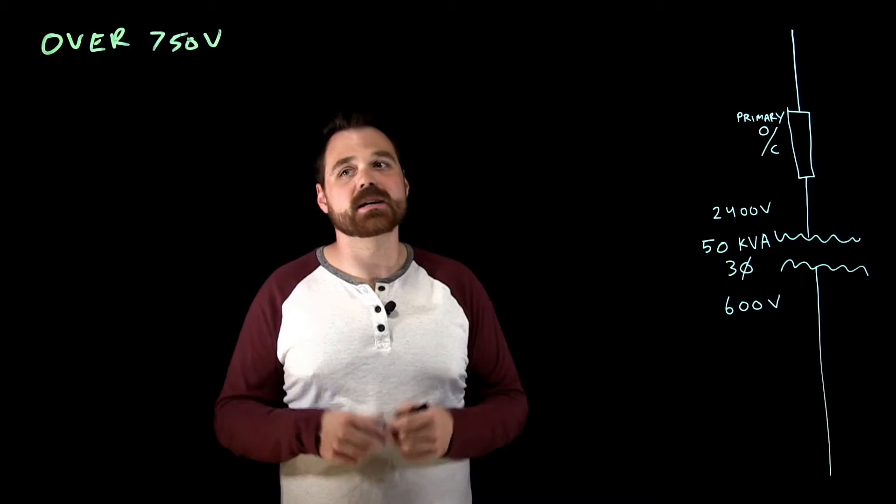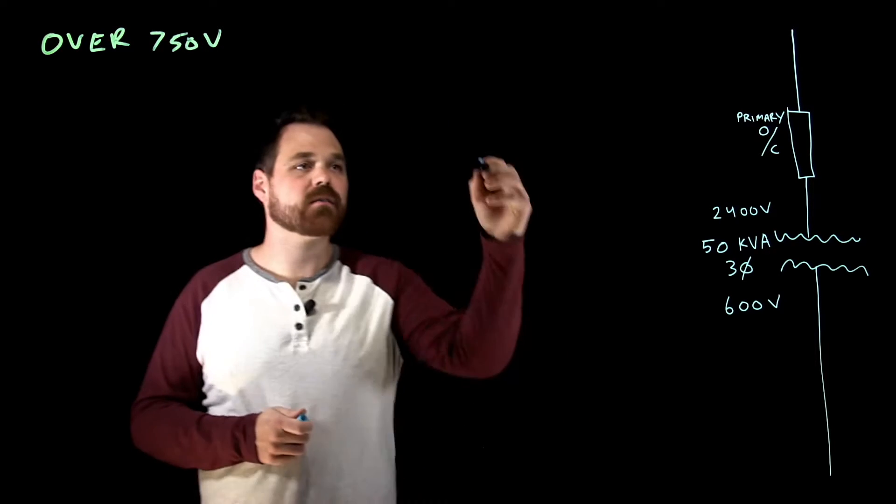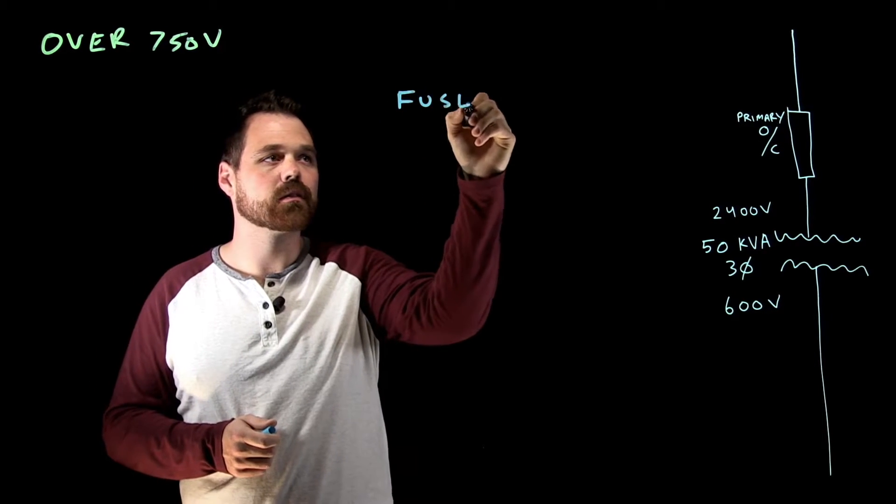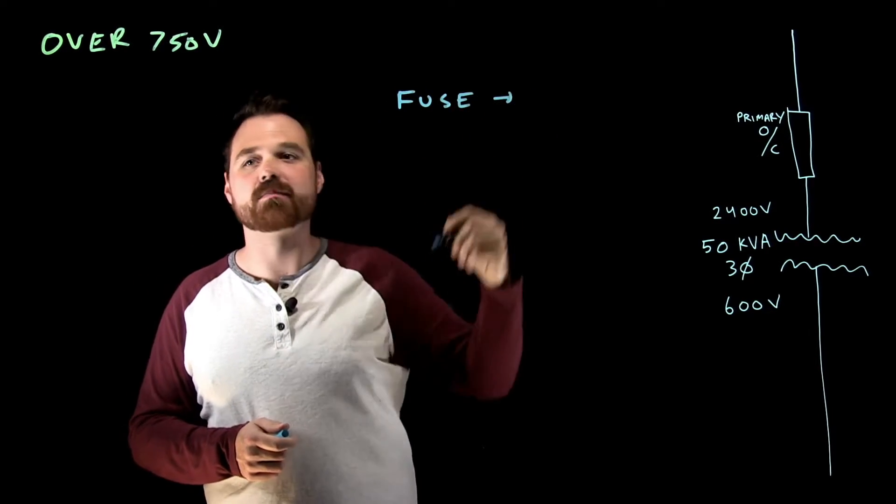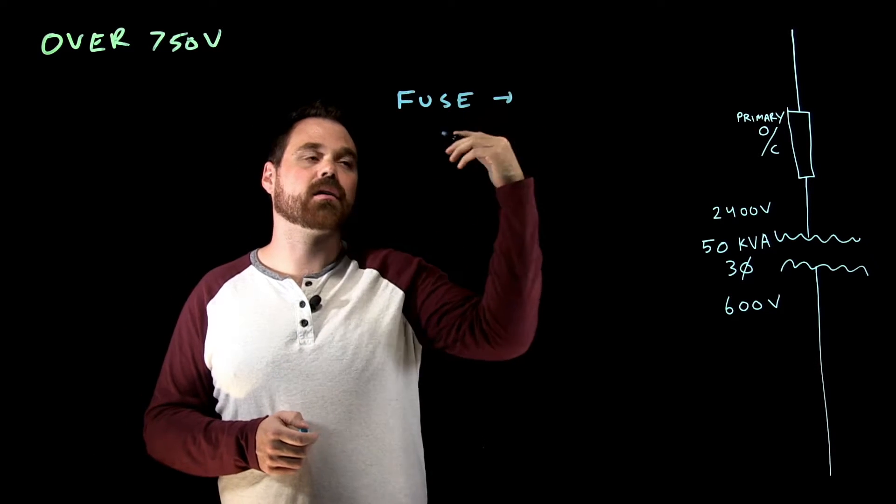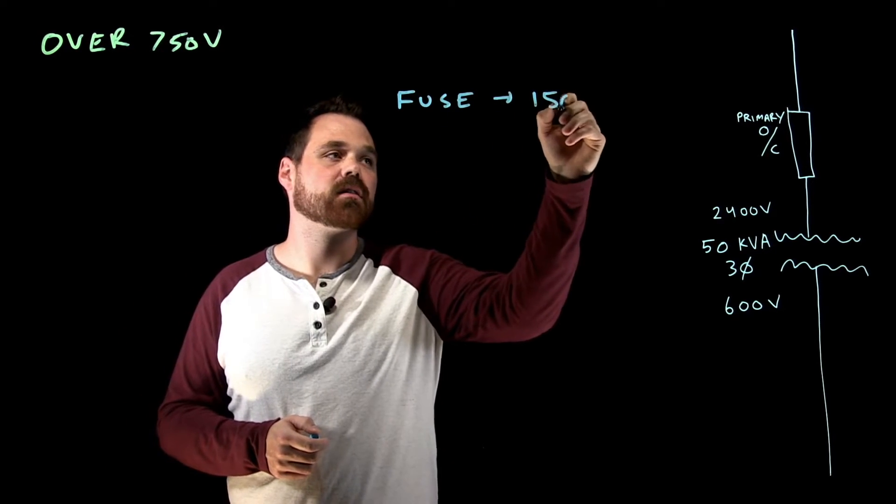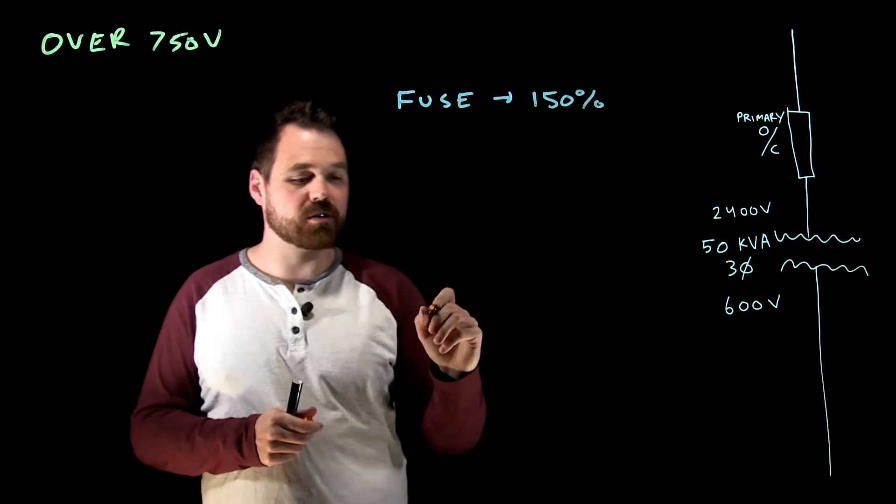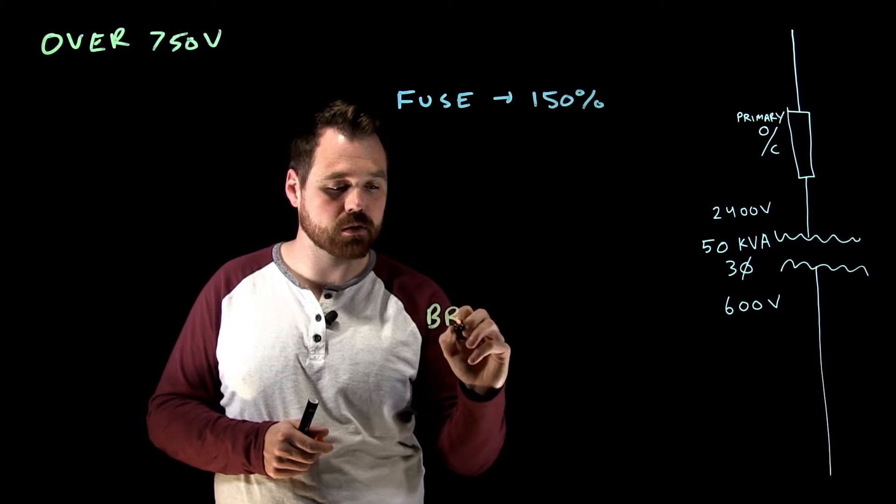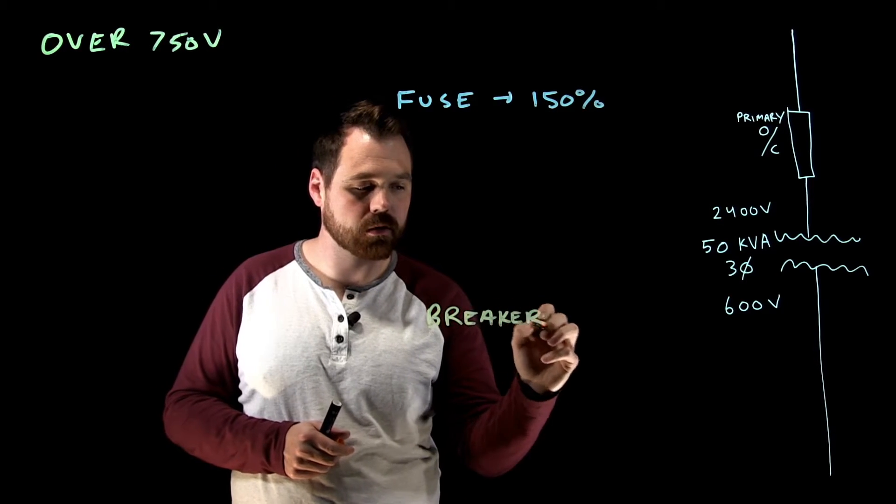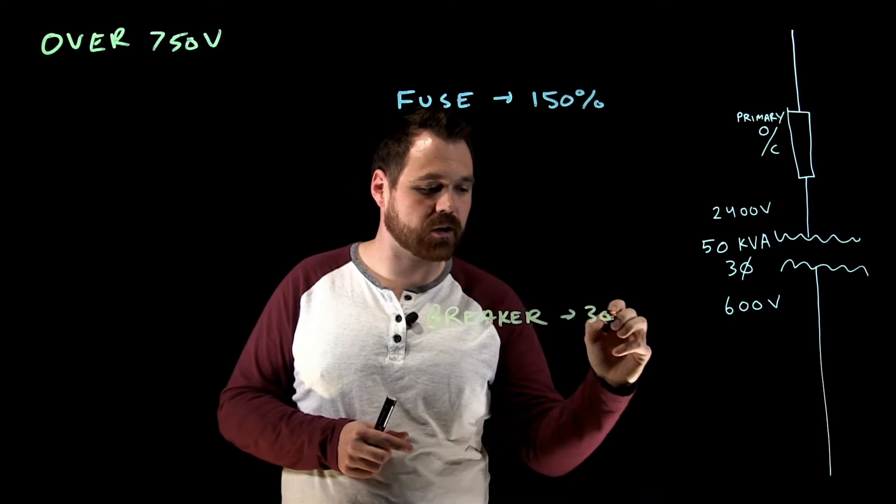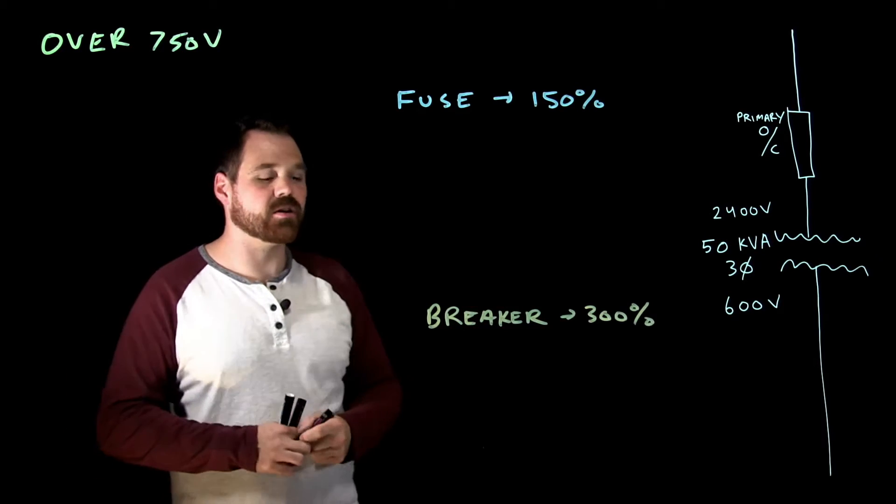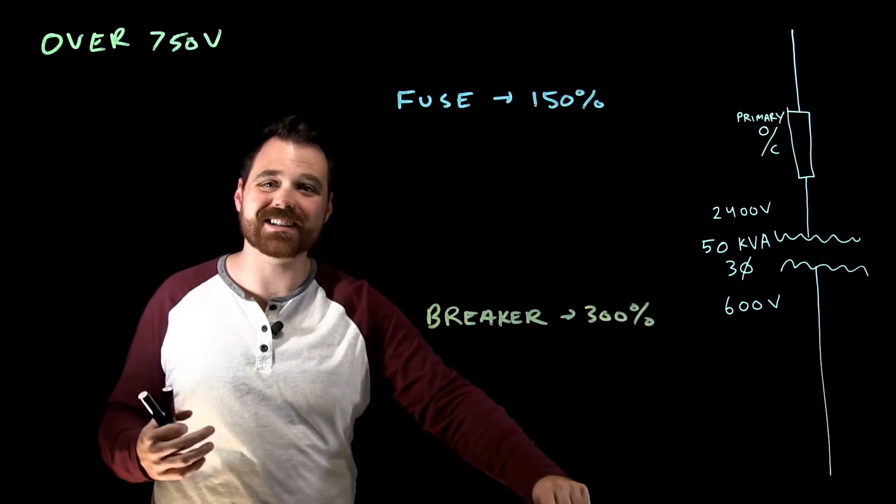Now what the code book tells us is if you're going to use a fuse, it's different rules, but if I'm going to use a fuse, my fuse can be based upon 150% of the current. If I'm going to use a breaker, it's based upon 300% of the rated current. So what I need to do here is I need to figure out what my rated current is.